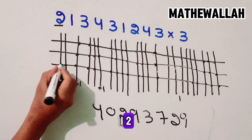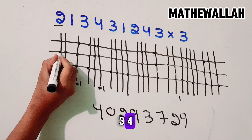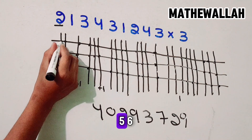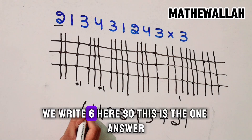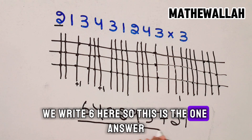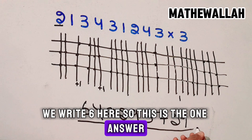1, 2, 3, 4, 5, 6 — we write 6 here. So, this is our answer.